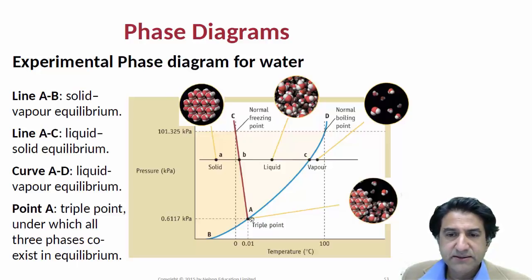The temperatures on this line correspond to the freezing point at different pressures. If you change the pressure on a substance, it will change its freezing point. Now water is rather unusual.